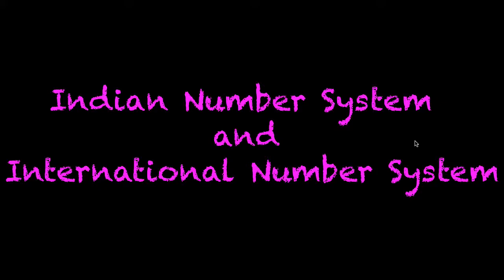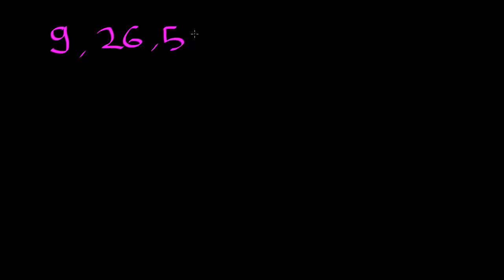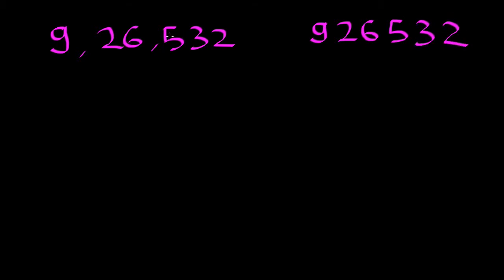Today let us look at the Indian number system and the international number system and the differences between the two. Let us start with an example — the number 9 lakhs 26,532. I'm going to write the same number here without commas just to explain. This is the number written in the Indian number system form, and the same number written in the international system form.